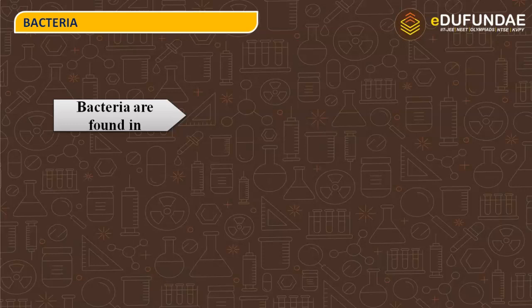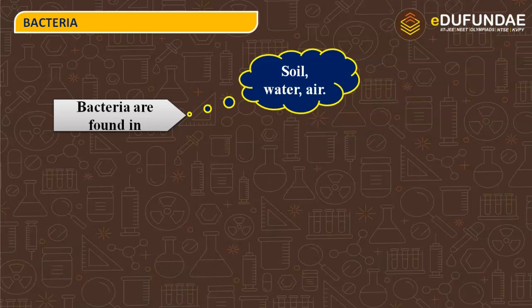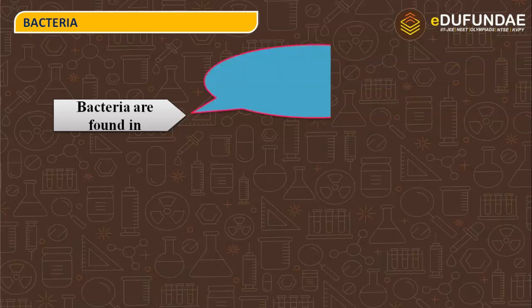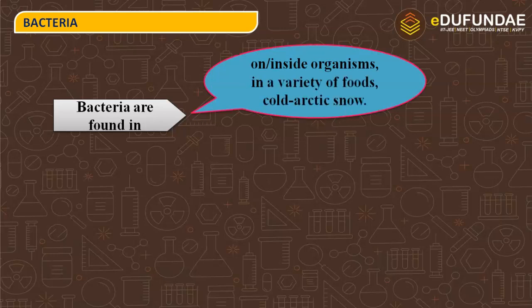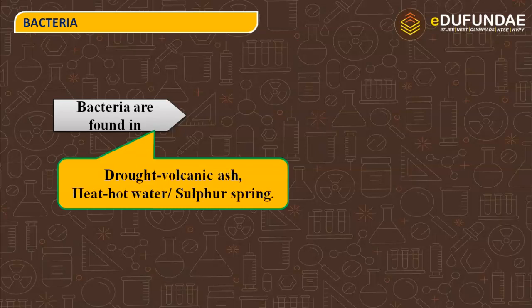Where are bacteria found? They can be found in soil, water, and air, on or inside organisms, in a variety of foods, and even in cold Arctic snow. They are also found in extreme locations such as drought conditions, volcanic ash, hot springs, and sulphur springs — places where life normally cannot exist. That is why bacteria are considered the most diverse organisms found across all habitats.